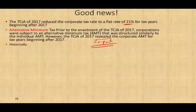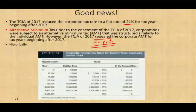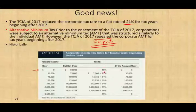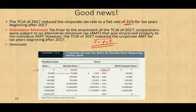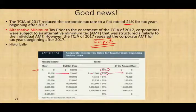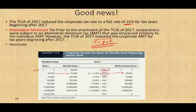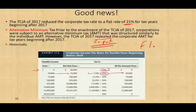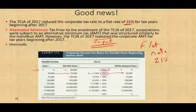Historically, the corporate tax rate structure before the Tax Cuts and Jobs Act was progressive — between $0 and $50,000 you paid 15%; between $50,000 and $75,000 you paid $7,500 plus 25% above $50,000, and so on — similar to how personal income tax is computed. Now it's a flat 21%. Very simple.